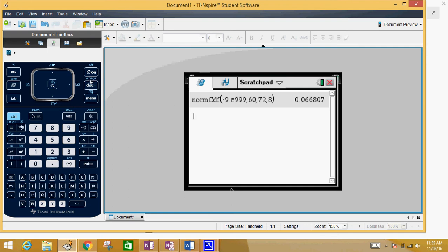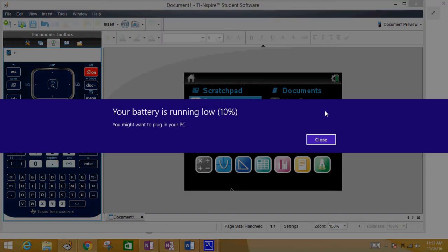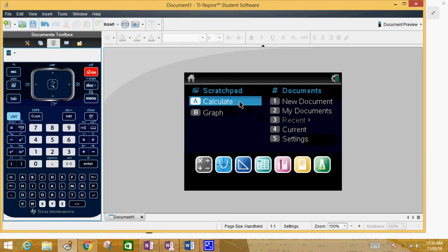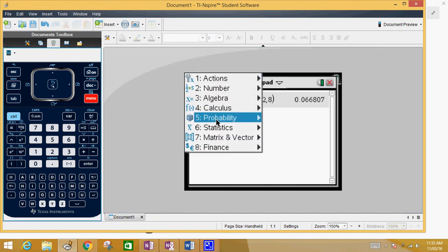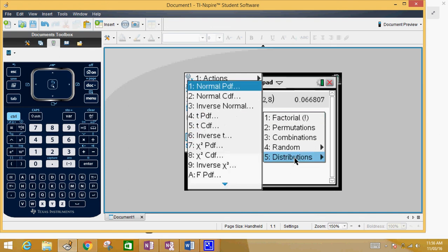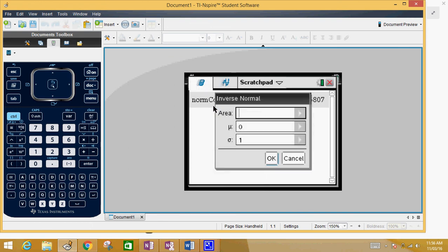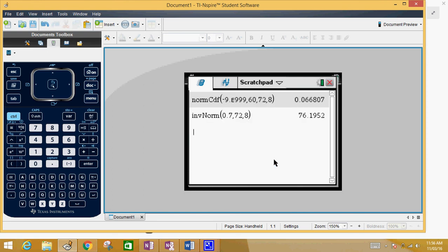So once again it's Menu, probability, distributions. This time we're doing the inverse, we're doing the opposite way. The area is not going to be 30%, but it's going to be 70%, and they want it in a decimal so I'm going to put 0.7. The mean is still 72 and the standard deviation is 8. Press OK and it says 76.2.